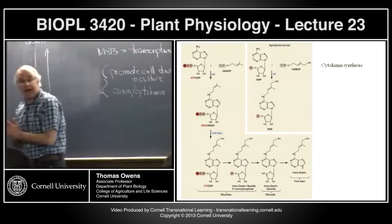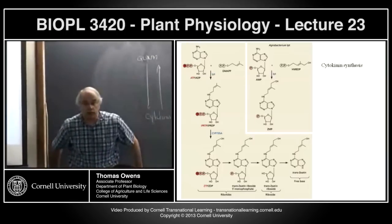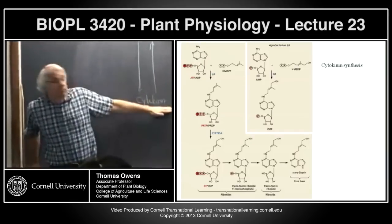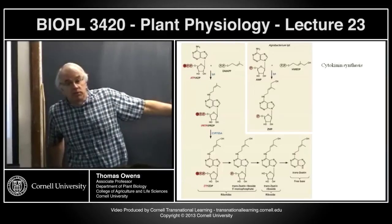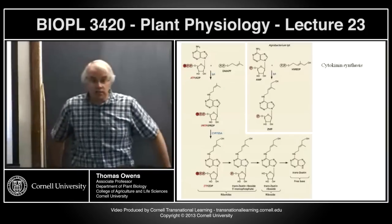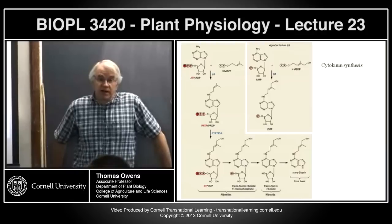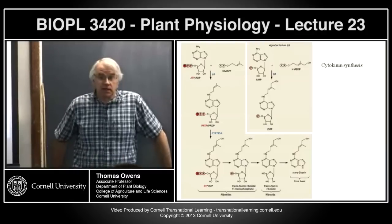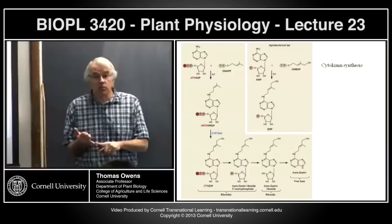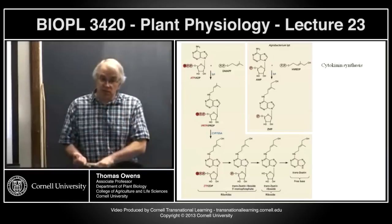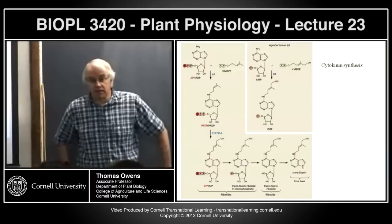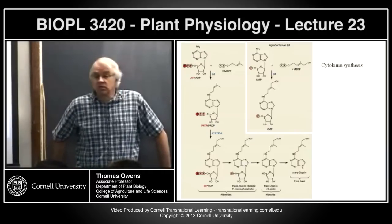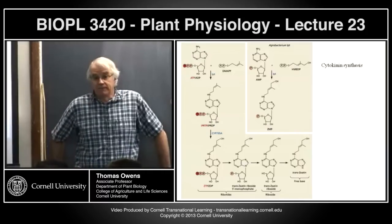How is cytokinin transported? Since it's produced in root apical meristems, the major route is in the xylem. Long distance transport of cytokinins is largely in the xylem. It's not entirely in the xylem because cytokinins are also produced by young leaves and young fruits — so there is some transport in the phloem as well, but mostly in the xylem.